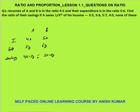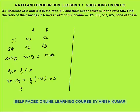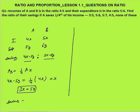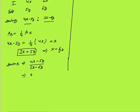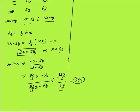A saves one fourth of his income, so A's saving (4x − 5y) equals one fourth of 4x. Solving this gives 3x = 5y. Substituting into the saving ratio: (4x − 5y)/(5x − 6y) = (20/3y − 5y)/(25/3y − 6y) = (5y/3)/(7y/3) = 5:7. The ratio of their savings is 5:7.